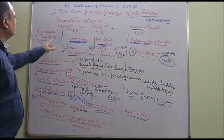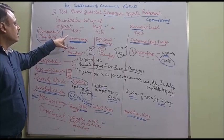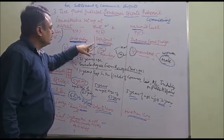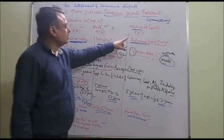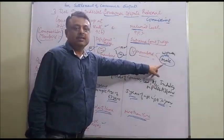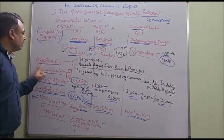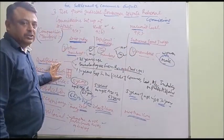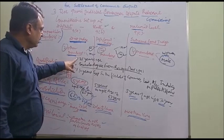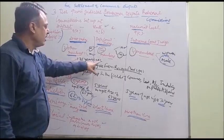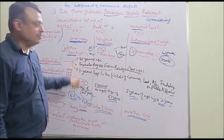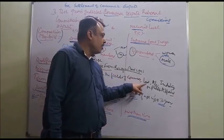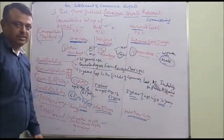Members of the commissions: the first member is the judge of the district and the other two members — one is male and the other is female. In case of State Commission, two members are there — one is male and the other is female. In case of National Commission, four members are there — one is a woman and the others are males. Regarding qualification of members, which is the same across all commissions: the person must be a minimum age of 35 years, must possess a bachelor's degree from a recognized university, and must have experience of 10 years in the field of commerce, law, accountancy, industry or public affairs.